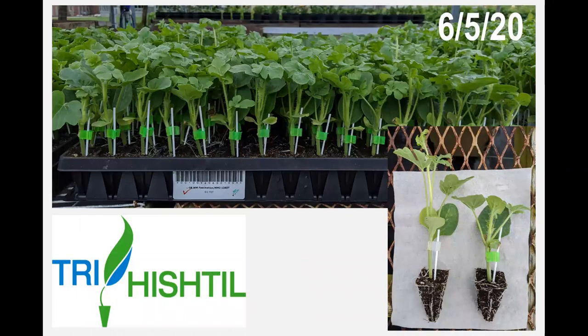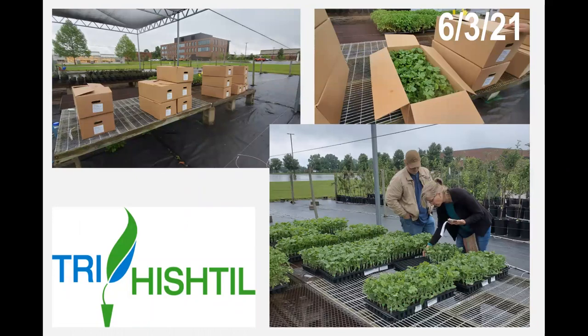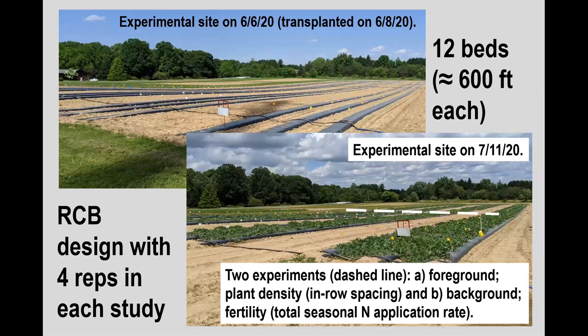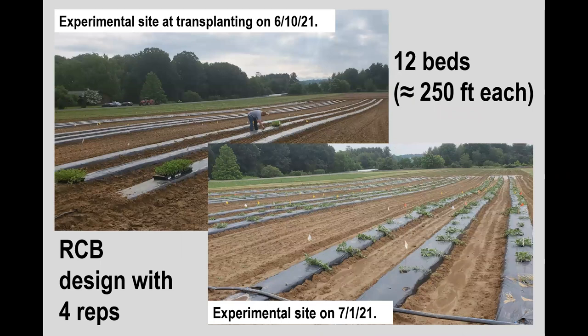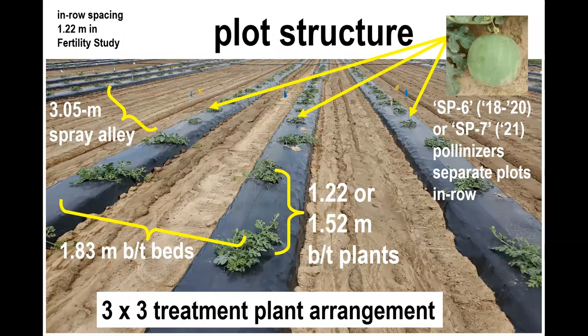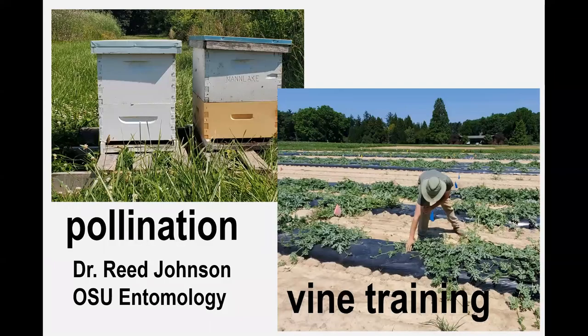Tri-Histo provided high-quality plants for the experiment, and it has been absolutely terrific to work with them. Plots were arranged in a randomized complete block design with 4 replicates each year — 2019, 2020, and 2021. Plants were separated in the row by 1.22 or 1.52 meters, and rows were separated by 1.83 meters. Plots totaling nine grafted or non-grafted plants were separated by two pollinizer plants in all three rows. Pollination has been enhanced with the assistance of hives provided by Dr. Reed Johnson of OSU Entomology, and we trained vines for the first 50 days or so to assist in identifying fruit at harvest.